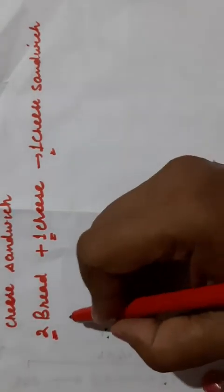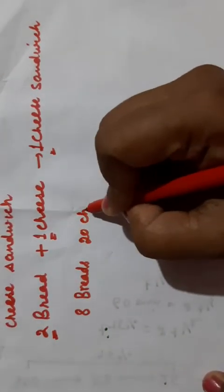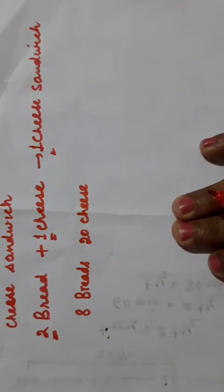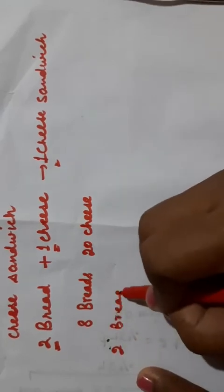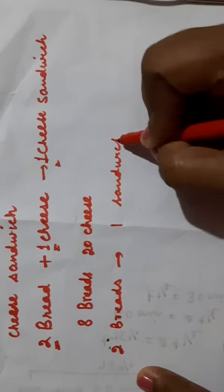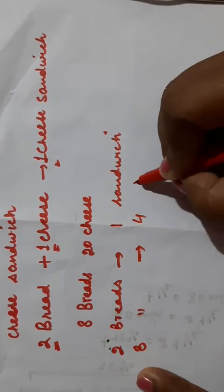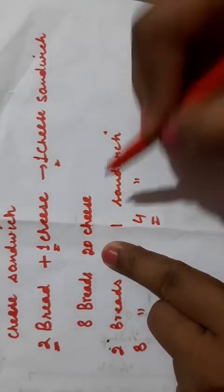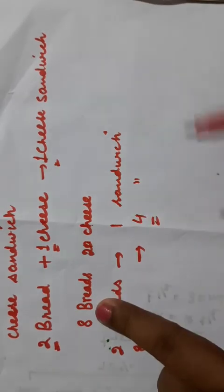Suppose you are given eight breads and twenty cheese. How many maximum cheese sandwiches will you be able to prepare? You need two breads to make one sandwich. So with eight breads you can prepare four sandwiches. With twenty cheese you could prepare twenty sandwiches, but there are only eight breads, so using eight breads you can prepare only four sandwiches.